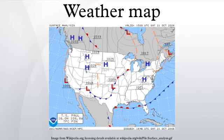A weather map displays various meteorological features across a particular area at a particular point in time, and has various symbols which all have specific meanings. Such maps have been in use since the mid-19th century and are used for research and weather forecasting purposes.